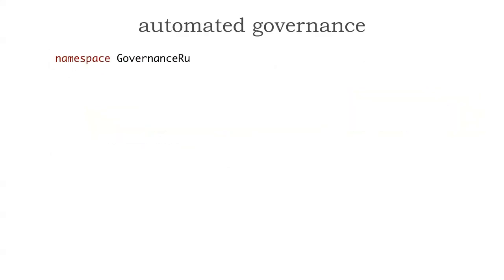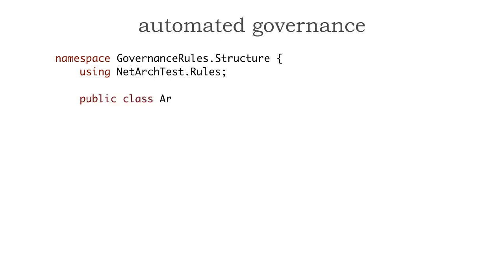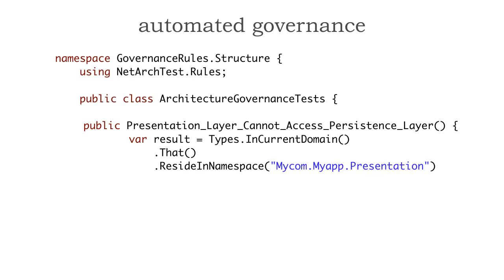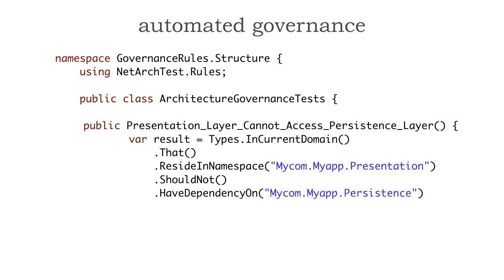Now let's look at the same test in C# using NetArcTest. I'm going to create a namespace GovernanceRules.Structure. Here's the architecture governance test: 'presentation layer cannot access persistence layer.' What we have is: types in the current domain that reside in a namespace mycom.myapp.presentation should not have a dependency on mycom.myapp.persistence. Then we get the result and pass the IsSuccessful into the result variable. It's a slightly different style of API, but still very intuitive.